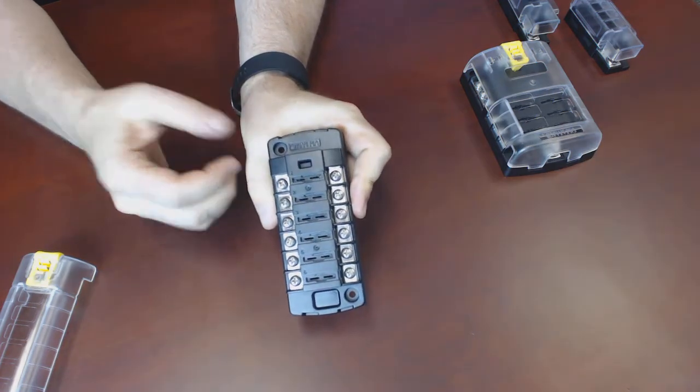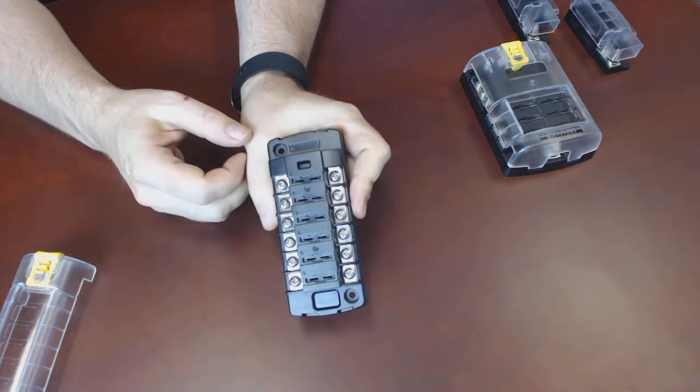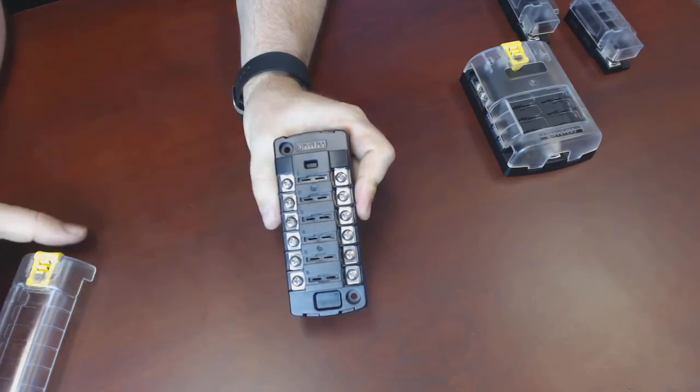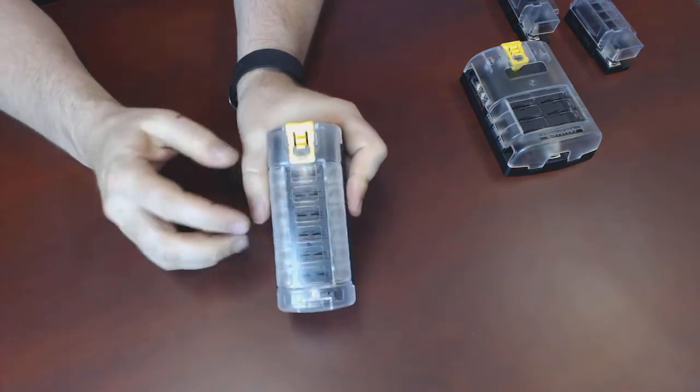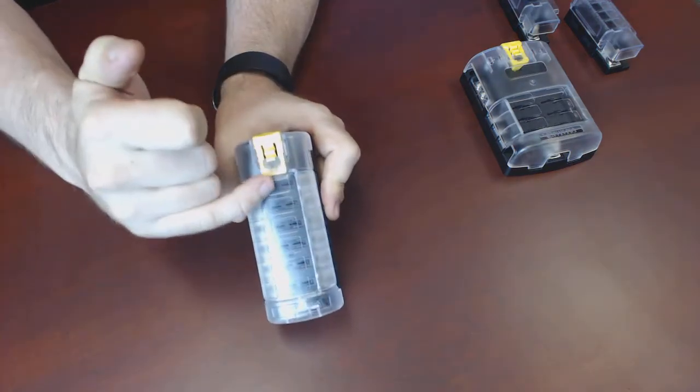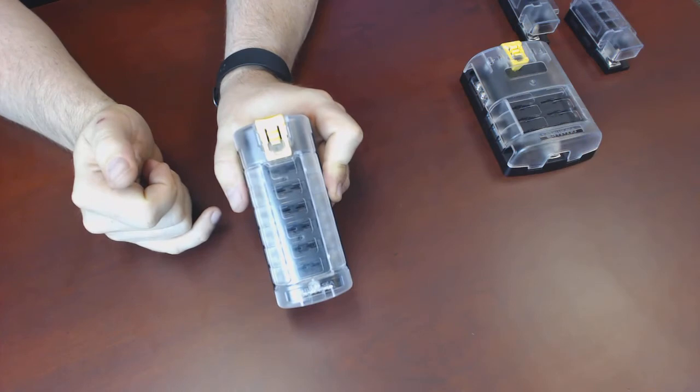It speeds your install up because you're doing less bundling and things, and it gives you a really nice finished product. It's also easier to troubleshoot because, like all these fuse blocks, it has label spots on the front.